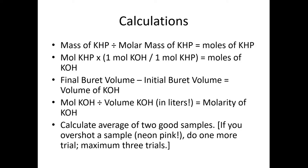And since we know what was the final volume in the burette minus the initial one, we can calculate how many milliliters of KOH were delivered, dividing the moles of KOH by the volume of KOH converted to liters. That gives us the molarity of KOH. And our goal is to find two good samples, in other words, two titrations that were not overshot, that had the light pale pink color. If you do overshoot one of your samples, then ask the stockroom to give you another little bit of KHP so you can do another trial. But we're gonna limit the number of trials to three. Maximum of three.